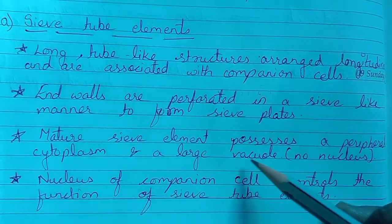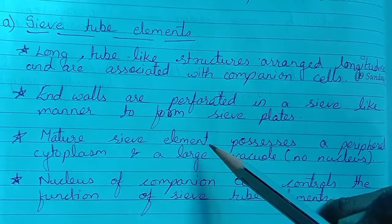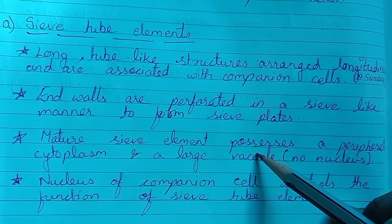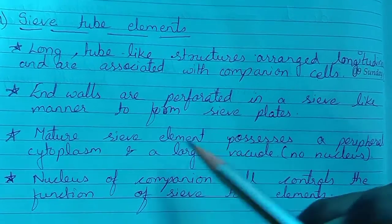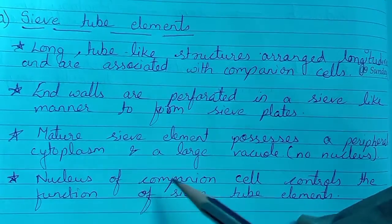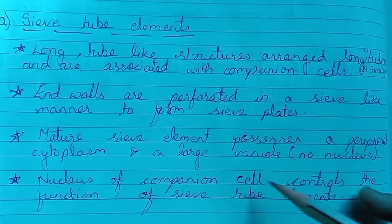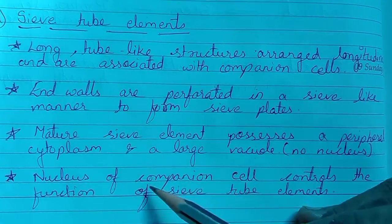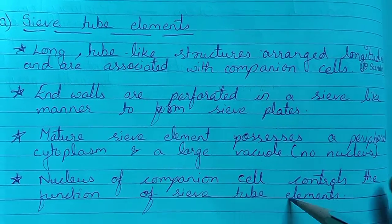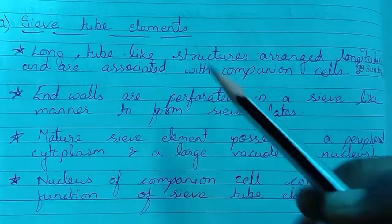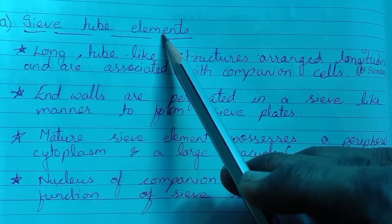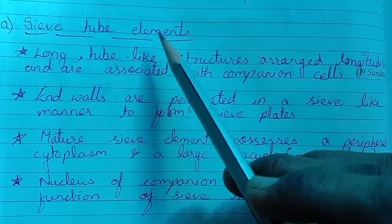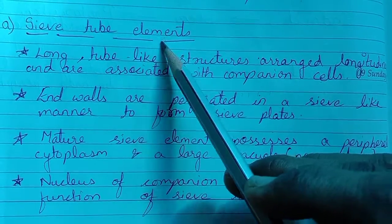Mature sieve elements possess a peripheral cytoplasm and a large vacuole. There is no nucleus, so there is no control over the cell itself. Therefore, the nucleus of the companion cell controls the function of sieve tube elements, which is why sieve tube elements are always connected with the companion cell.